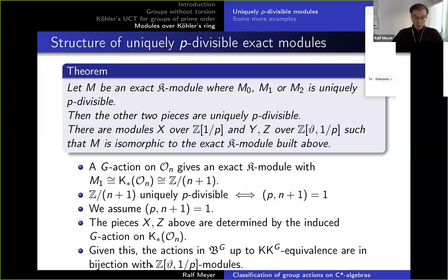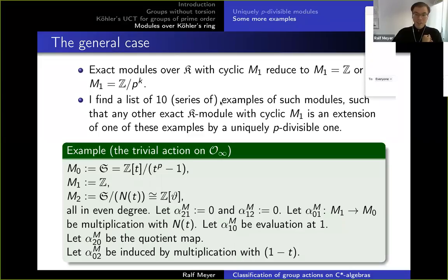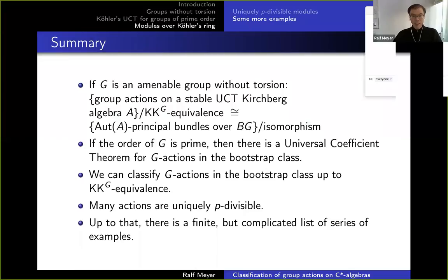In the general case when you don't assume uniquely p-divisible, in my paper I find a list of actually 10 examples — or rather series of examples with certain parameters — which are all examples of exact K-modules, and the result says that any exact K-module would be an extension of one of these examples by one which is uniquely p-divisible. I think I'll just skip those examples and come to the summary right away.